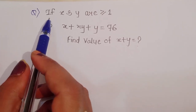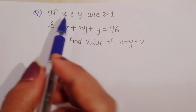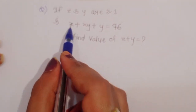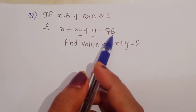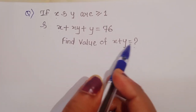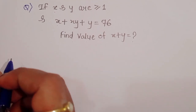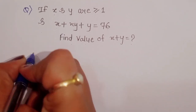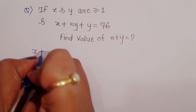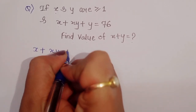The question is: given that x and y are positive integers (greater than or equal to 1) and x plus xy plus y is equal to 76, we have to find out the value of x plus y. Let's see the solution.